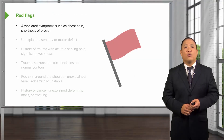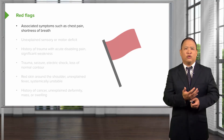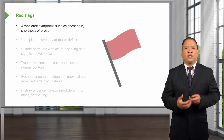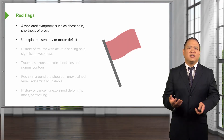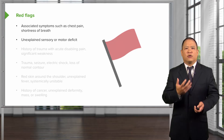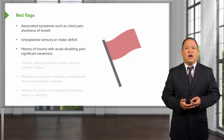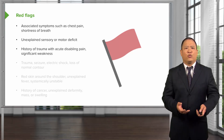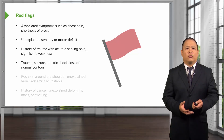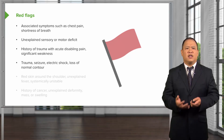There are red flags to be aware of when evaluating patients. Be wary of shoulder pain associated with chest pain or shortness of breath, due to potential heart disease or lung issues. If there is unexplained sensory or motor deficit, consider compression or irritation of nerves — such as a cervical disc or brachial plexus compression. If a patient has a history of trauma with acute disabling pain or significant weakness, ensure neurovascular integrity is intact. Trauma, seizures, electric shock, or loss of normal contour all raise the index of suspicion that something more serious is occurring.